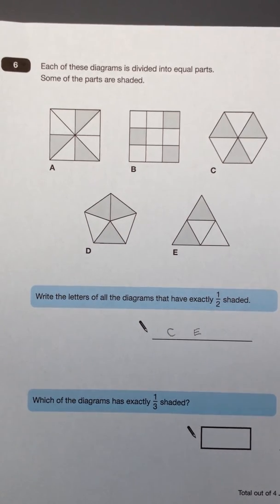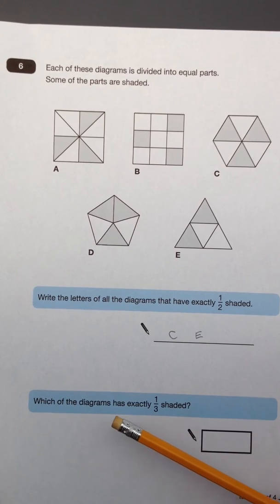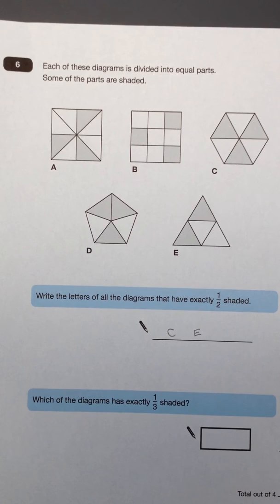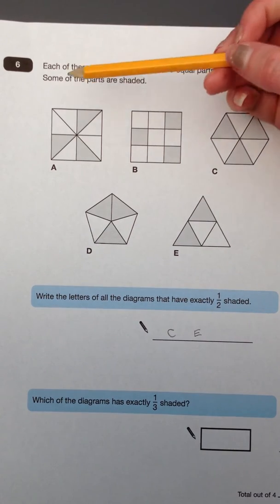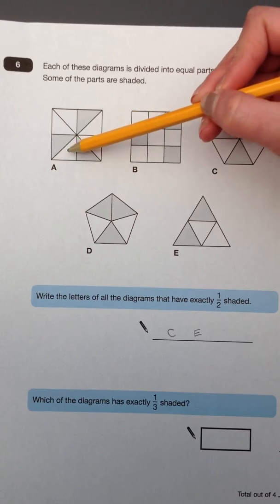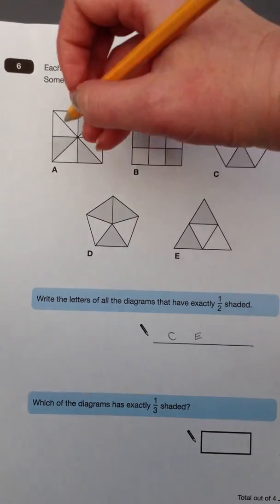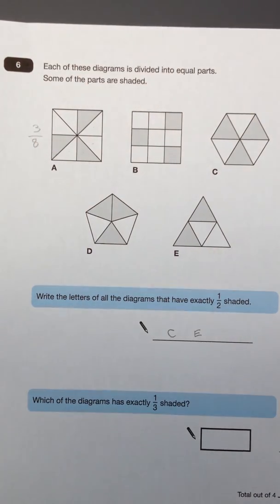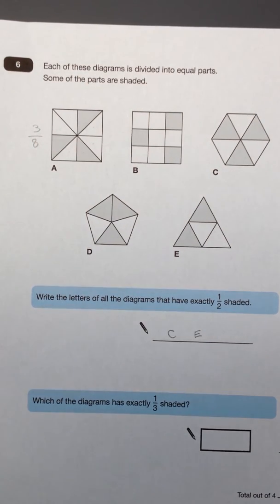The next part of the question asks, which of the diagrams has exactly 1 third shaded? Here we've got 1, 2, 3, 4, 5, 6, 7, 8. 3 eighths in diagram A have been shaded.